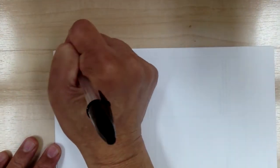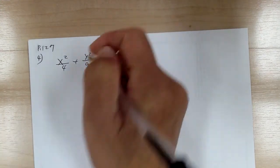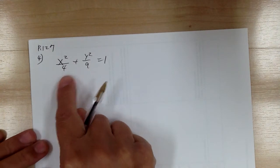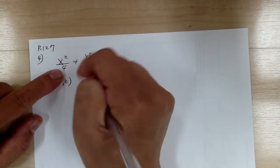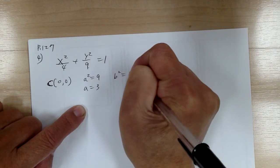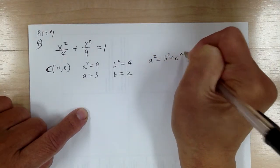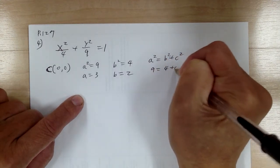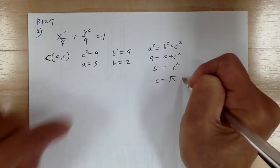Let's go to number 4. We have x squared over 4 plus y squared over 9 equal to 1. I'm writing the x first. Center is at (0, 0). A squared equals 9 — the biggest number is always a — so a equals 3. B squared equals 4, so b equals 2. Using the Pythagorean theorem: a squared equals b squared plus c squared, so 9 equals 4 plus c squared, so c squared equals 5, c equals the square root of 5, about 2.2. When you label, use the square root; when you plot the point, use the decimal.